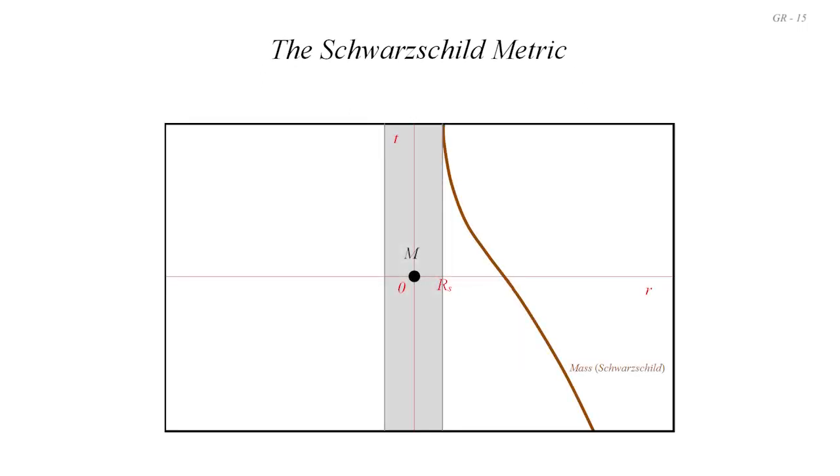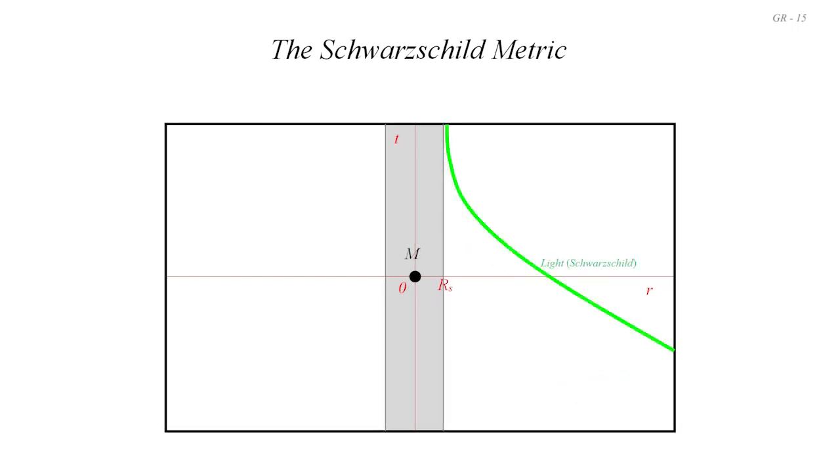In the last couple of videos in this series, numbers 13 and 14, we introduced the Schwarzschild metric for a non-rotating uncharged black hole. We discussed the fact that with that metric, an outside observer in what we've been calling the red frame will measure someone falling into a black hole to be slowing down to zero velocity before reaching the event horizon, and they will never measure them accurately to have passed through the Schwarzschild radius.